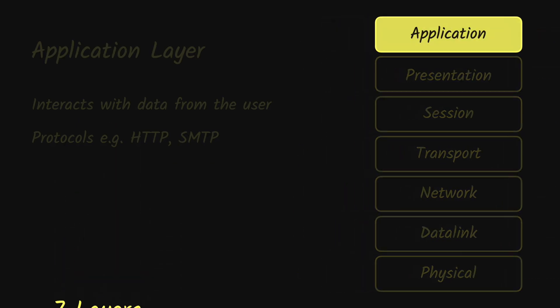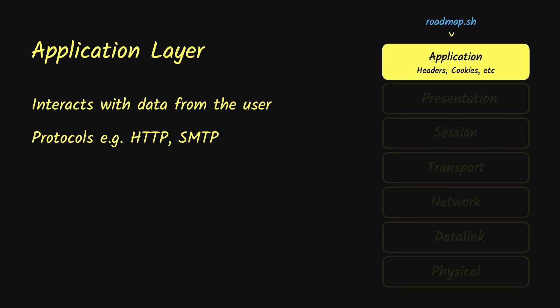First, we have the application layer, which is the only layer that interacts directly with the data from the user. For example, when the browser opens a website, the application layer is responsible for preparing the HTTP request that is going to be sent over the network — adding the required headers, cookies, and so on. One important thing to remember is that the application itself is not part of the application layer, so the browser is not part of it.